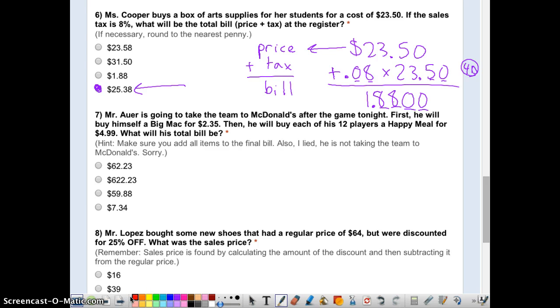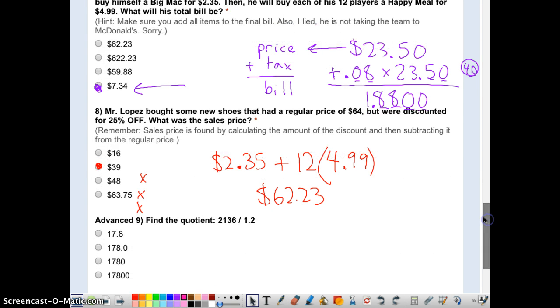Mr. Auer taking the team to McDonald's. He buys himself a Big Mac for $2.35. He eats it while all the students watch. And he also buys 12 Happy Meals, each one costing $4.99. 12 Happy Meals. So you need to do $2.35 plus 12 times $4.99. And I actually know that 12 times 5 is 60, so this one can't be it. It's got to be more than 60. We have this $2.35. The only one that's a little bit more than 60 is A. And if you did the actual math, you would also come out with $62.23.